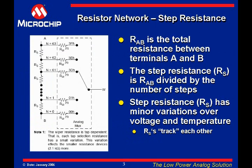The resolution of the potentiometer device determines the number of positions, or steps, on the resistor network that the wiper can connect to. Therefore, 6-bit resolution gives you 64 positions, and 8-bit resolution gives you 256 positions.